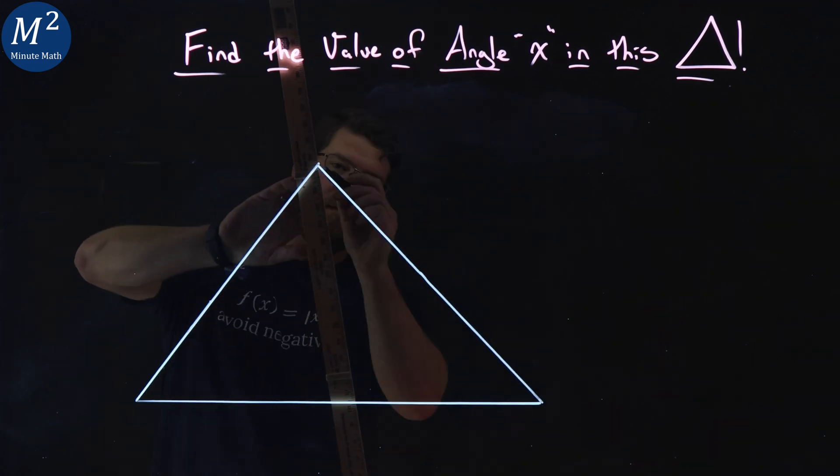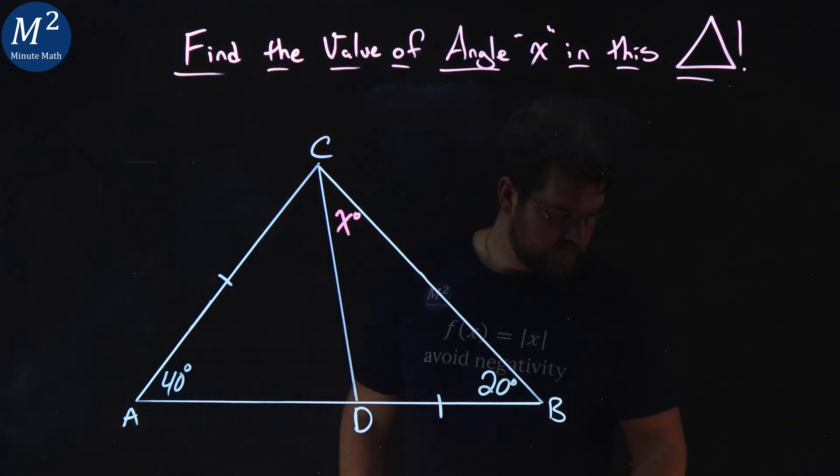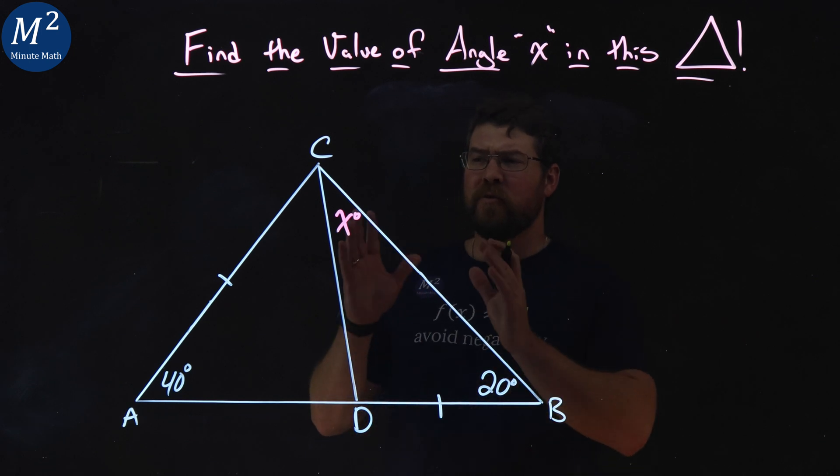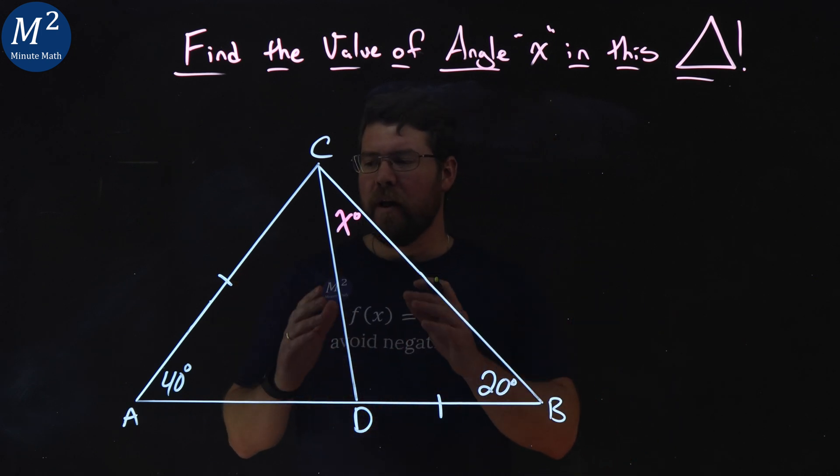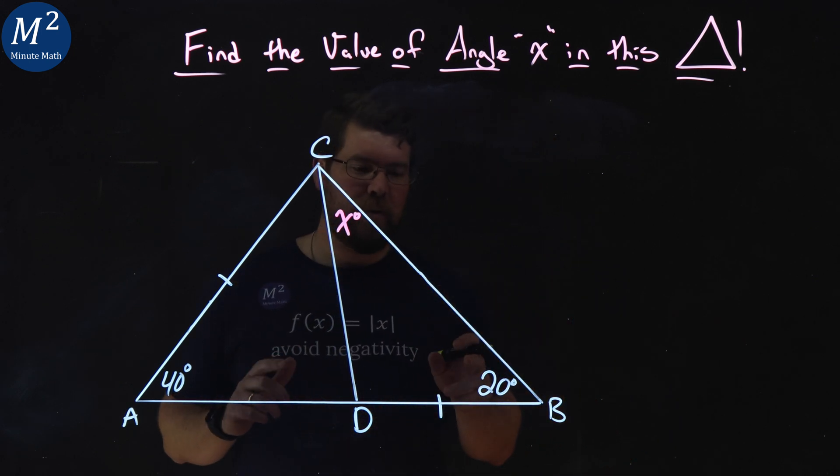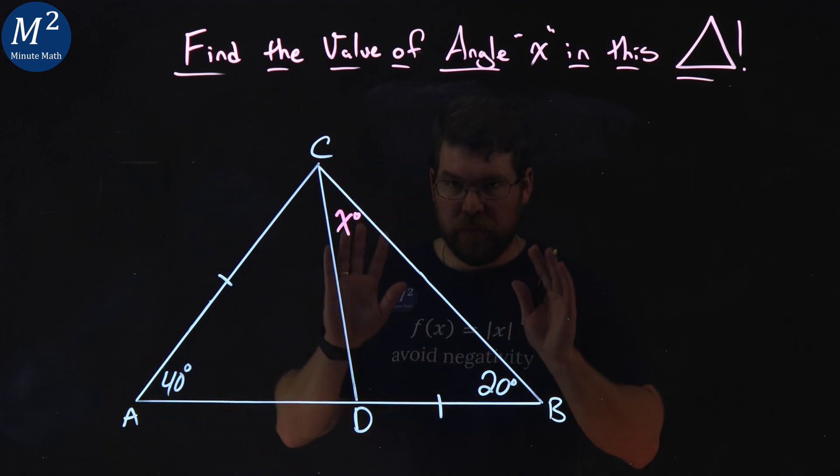Let's find the value of angle X in this triangle. Now, before we start, this triangle is not drawn to scale, but I thought it'd be helpful to kind of see it this way, so it'd be easier to draw than the actual values.